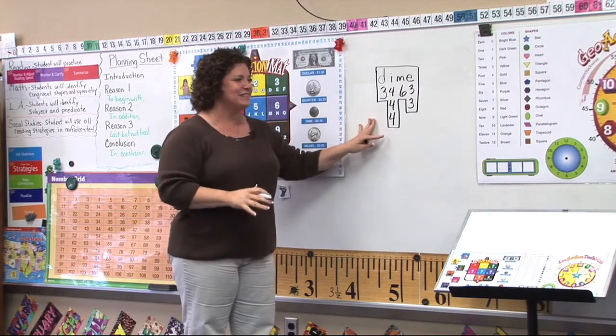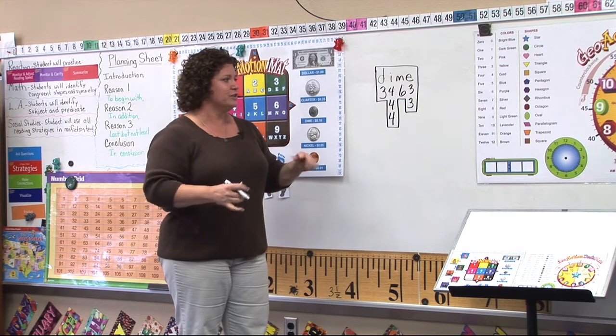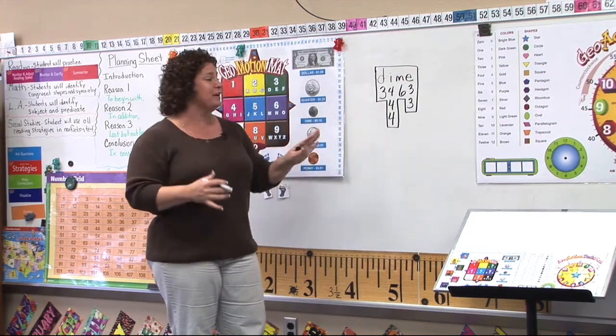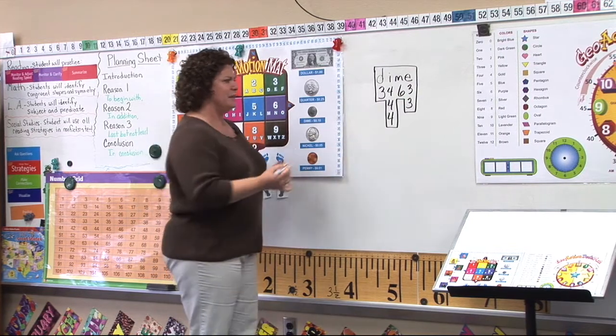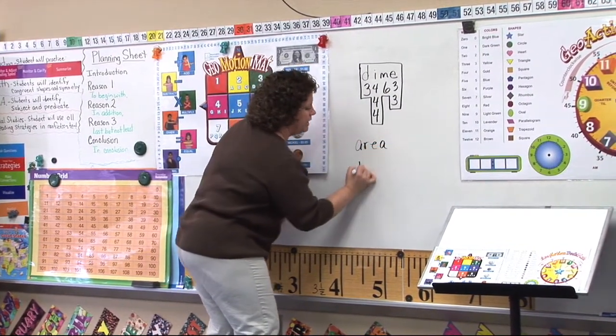Then the students got so excited when they saw this because in math we're doing area and perimeter. So the kids are going, Miss Johnson, Miss Johnson, there's something else we can do. We can do area and perimeter with this. So I'm like, okay, how would we do that? So they were like, okay, we put area down and perimeter.